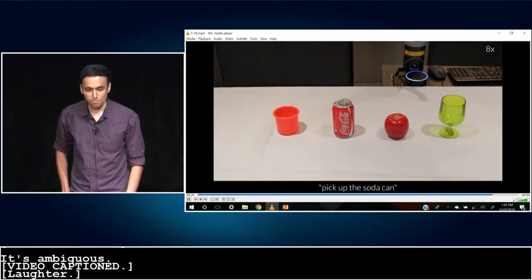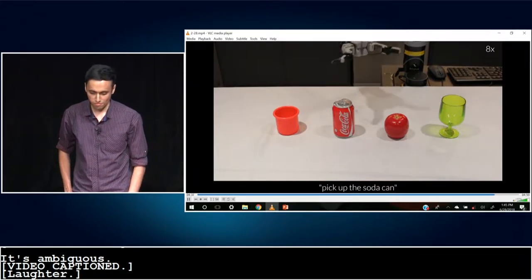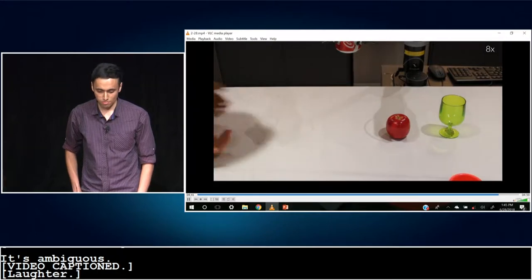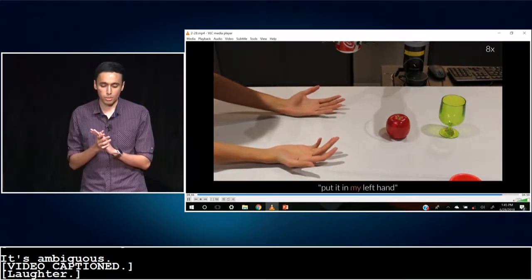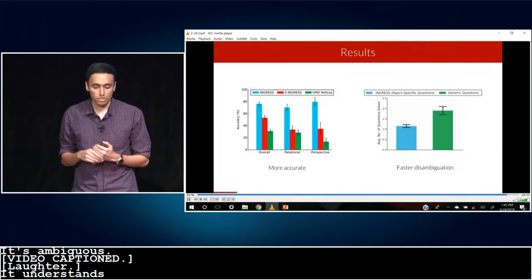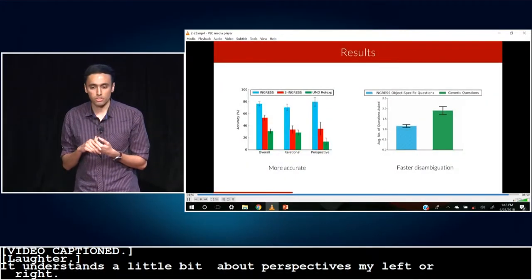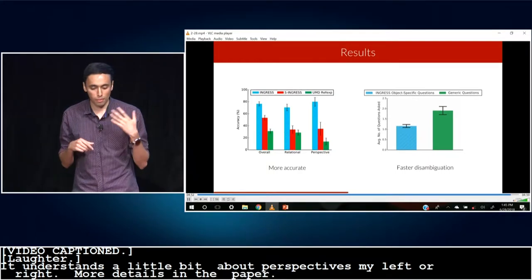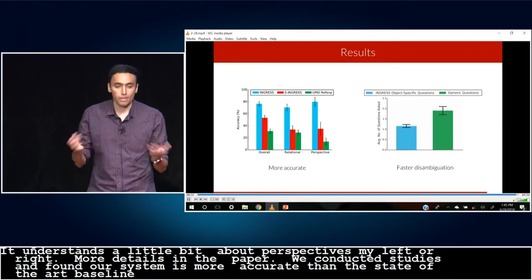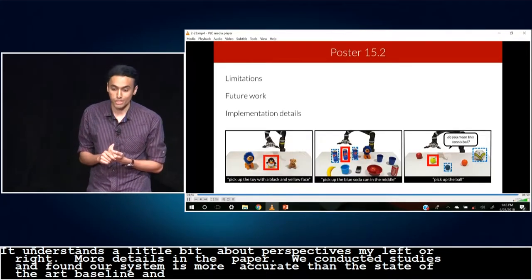Pick up the apple. Do you mean this apple on the bottom right? No. The apple on the top left. Pick up the soda can. Put it in my left hand. So it also understands a bit about perspectives, like my left, my right. More details on this in the paper. We conducted a couple of user studies to evaluate our setup, and we found that our system is more accurate than a state-of-the-art baseline, and we're also faster in terms of disambiguation. I'd be happy to talk more in the poster session. Thank you.